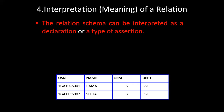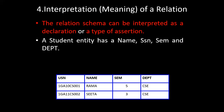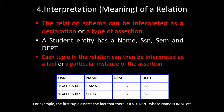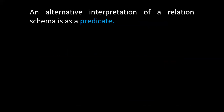Similarly, from the second row we can interpret: there is a student named Sita from CSE, third semester, with USN 1GA11CS002. A relation is such that it is easy to interpret by giving proper meaning. For interpretation we can use the relation schema, which can be interpreted as a declaration or a type of assertion — whatever we have declared should be a fact, true for a particular instance of that relation.